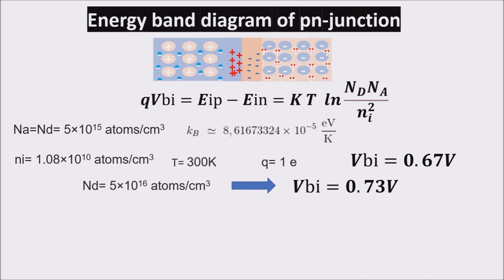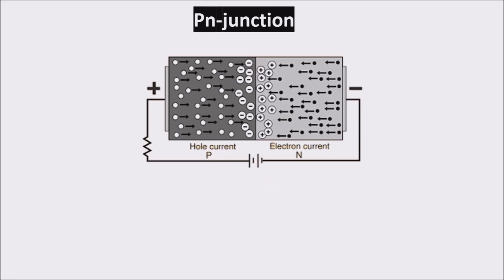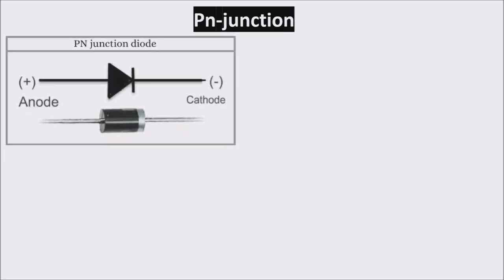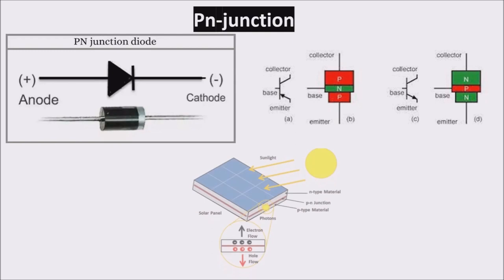So, the barrier potential depends on the semiconductor used, on the dopant concentration, but especially on temperature because of the linear relation. By applying a contrary voltage to the junction, we can lower the barrier potential. Controlling the barrier potential, we control PN junction conductivity, through which we can create numerous devices, among which diodes, transistors, and solar cells.